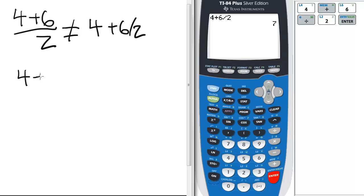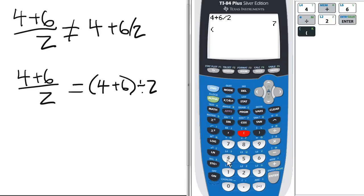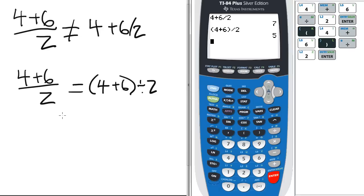Rather, 4 plus 6 over 2 equals, for the calculator's sake, 4 plus 6 in parentheses divided by 2. So let's do it that way. Open parentheses, 4 plus 6, close parentheses, divided by 2. 5. This is the right answer.